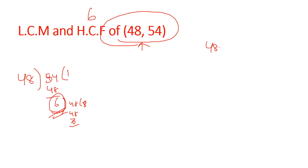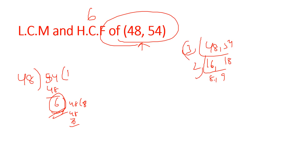Now for the LCM of 48 and 54, we use the normal method — looking at factors using the 3 times table: 3×16 = 48 and 3×18 = 54. Choosing the 2 table: 2×8 and 2×9. So LCM = 3×2×8×9, and 6×8×9 gives us the LCM.